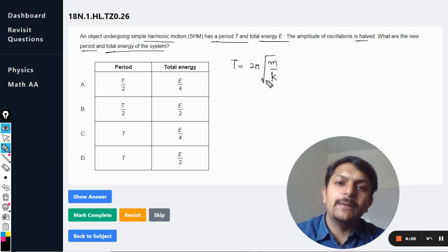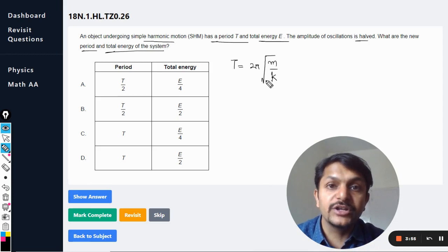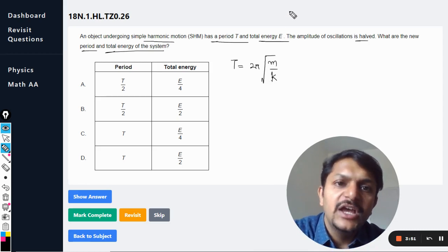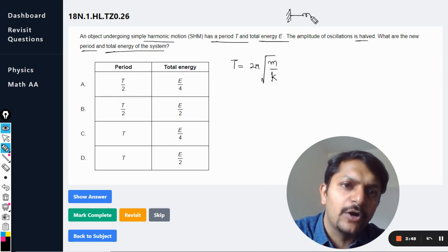So if the amplitude is halved or if the amplitude is increased, it means that the time period of a simple harmonic motion will not change. And yes, ironically it will not change.